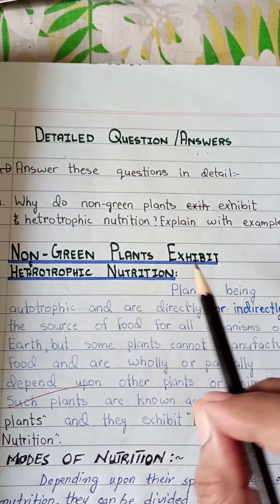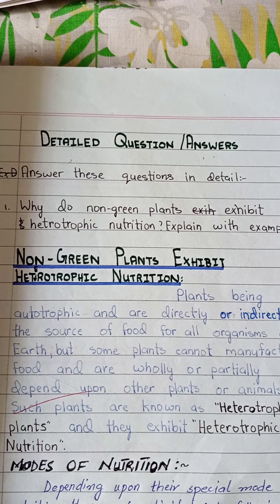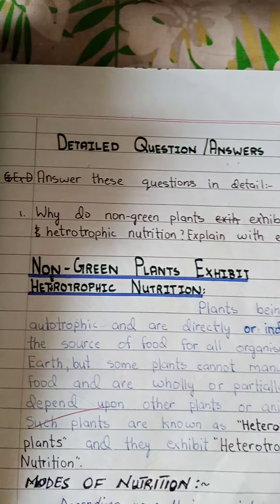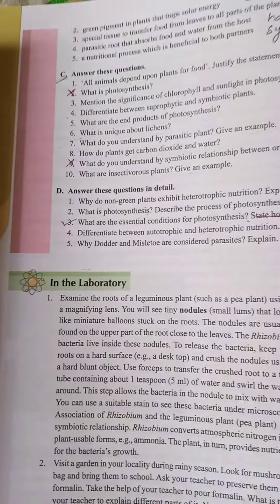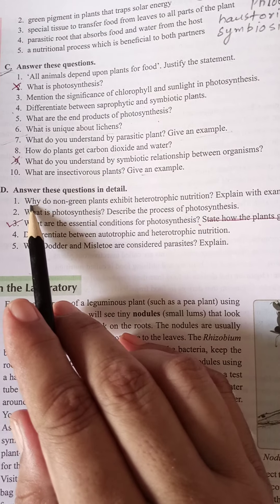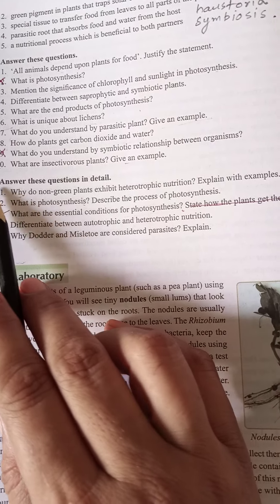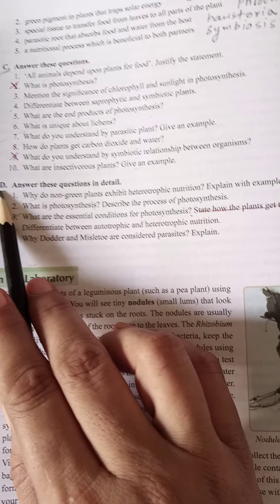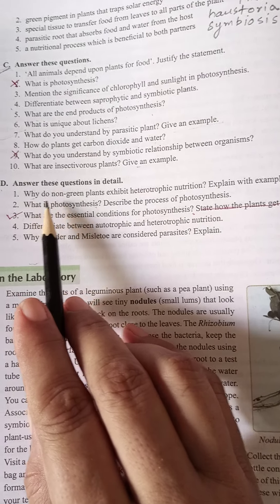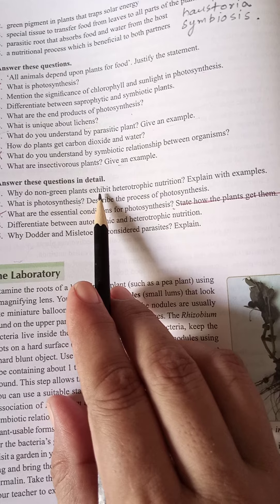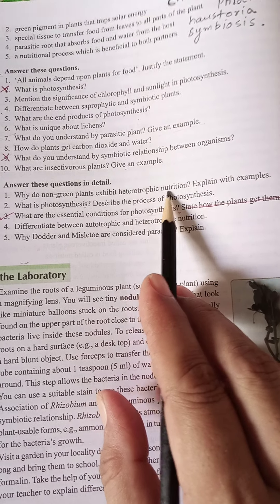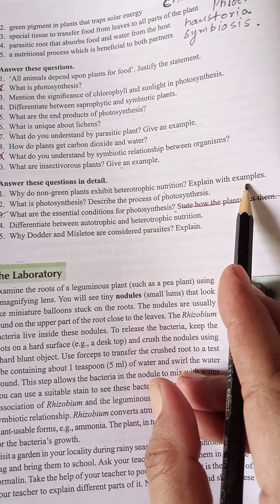Give the heading of detailed question answers with black cut marker and write question number 1, which is exercise D on page number 10 in your book. The first question is: Why do non-green plants exhibit heterotrophic nutrition? Explain with examples.